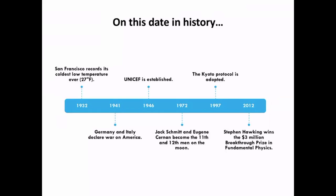There have only been 12 men that have landed on the moon. The last two to do it were Jack Schmidt and Eugene Cernan in 1972 on December 11th during Apollo 17. It was actually Cernan who was the very last person to leave his footprints on the moon. In 1997 the Kyoto Protocol was adopted — 192 parties intended to limit greenhouse gas emissions. It did not go into force until 2005, and the US had already dropped out four years prior.